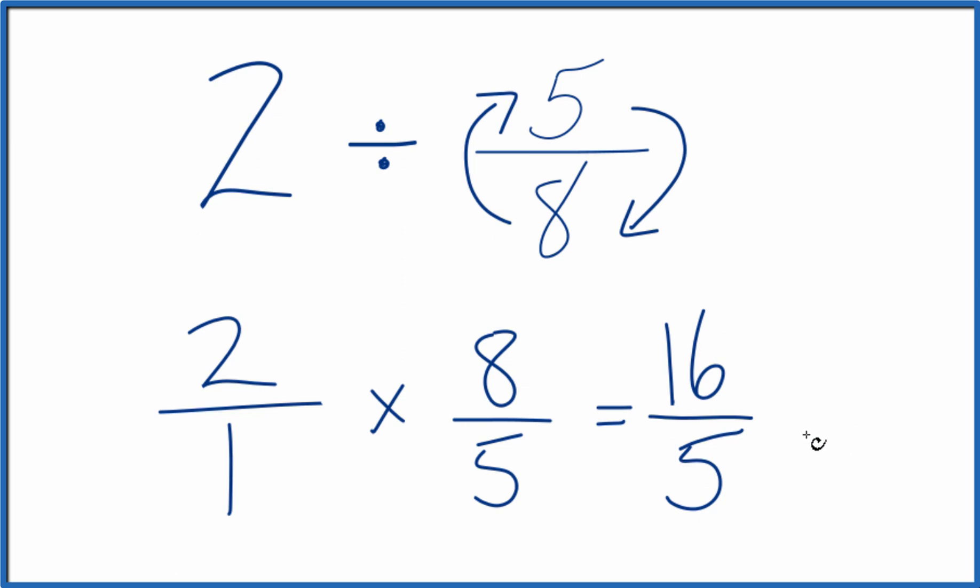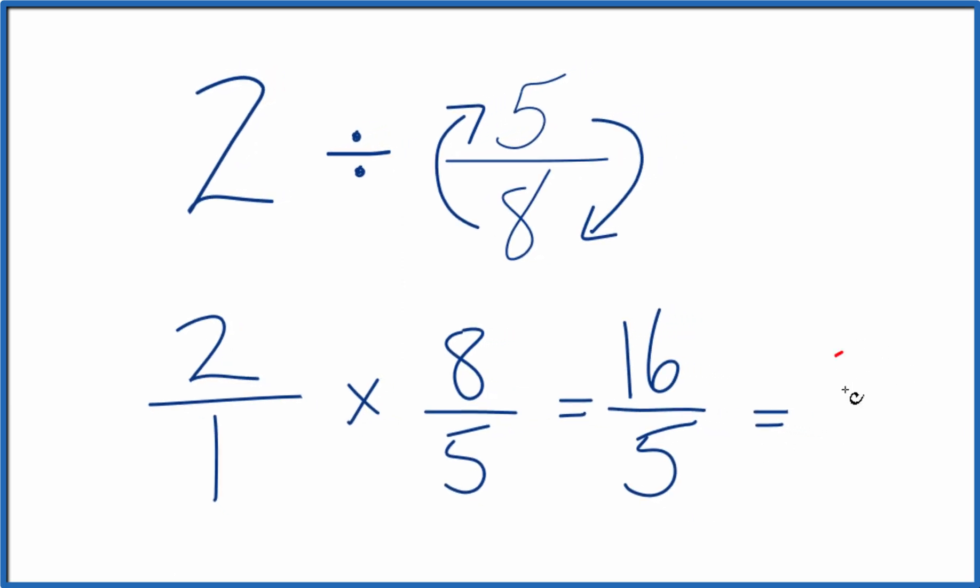Let's change it to a mixed number. 5 goes into 16, 3 times. 3 times 5, that's 15 with 1 left over. Bring the 5 across. So 16 fifths does equal the mixed number 3 and 1 fifth.